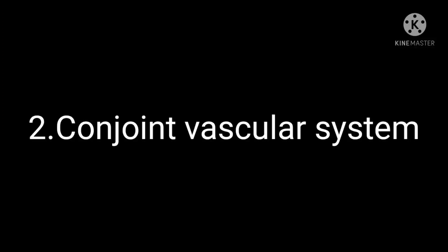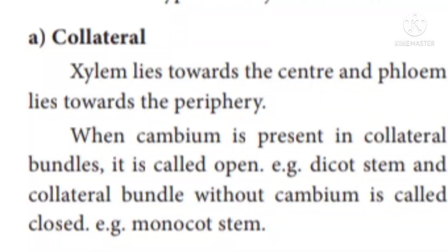In conjoint vascular bundles, the type is collateral. Xylem lies towards the center and phloem lies towards the periphery. There are two types: collateral open and collateral closed.